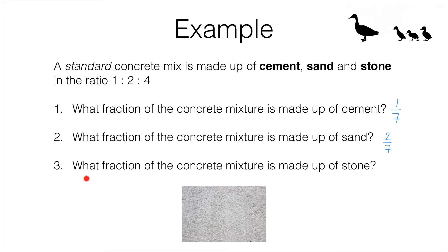And finally, the fraction of the concrete that is made up of stone is four out of seven parts, which would be four sevenths as a fraction.